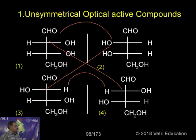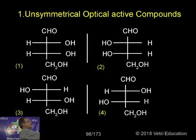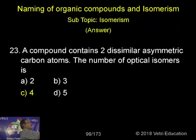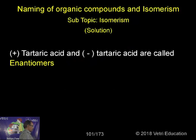They are not mirror images. So enantiomers means one will be the mirror image of the other, while diastereomers means one will not be the mirror image of the other. That is the most important information.